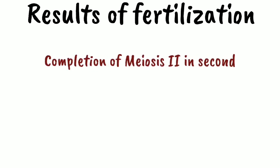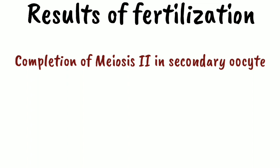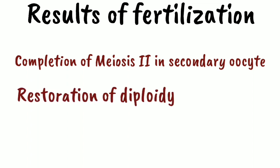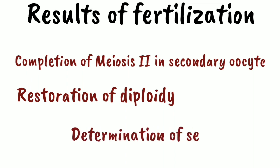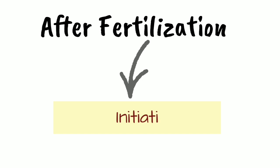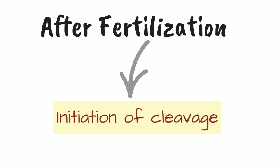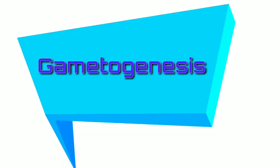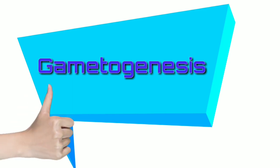Fertilization results in the completion of the second meiotic division of the secondary oocyte, restoration of the diploid number of chromosomes, and determination of the chromosomal sex of the future individual. After fertilization, there is initiation of cleavage. This concludes gametogenesis and fertilization.